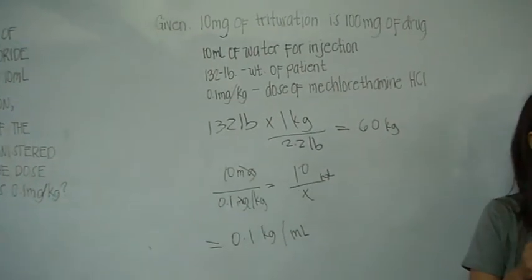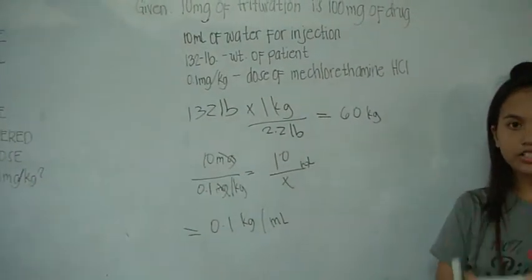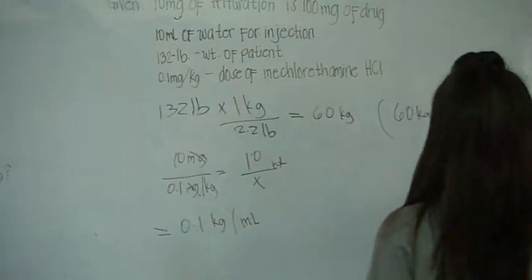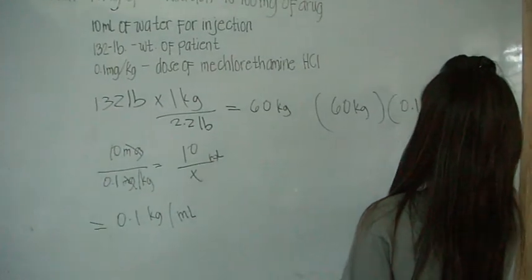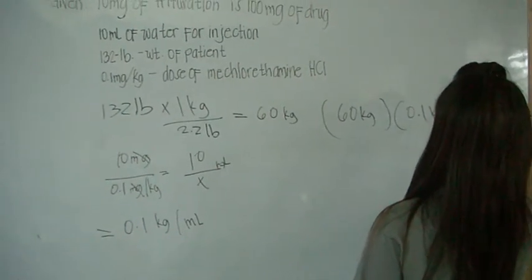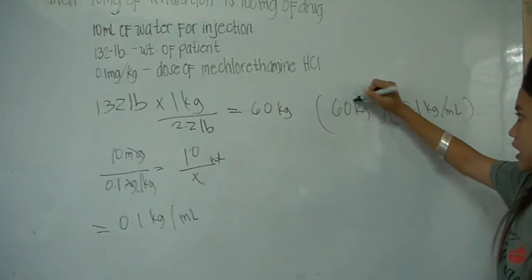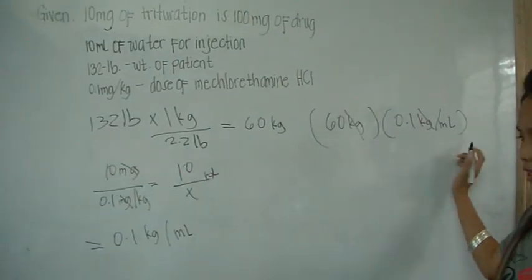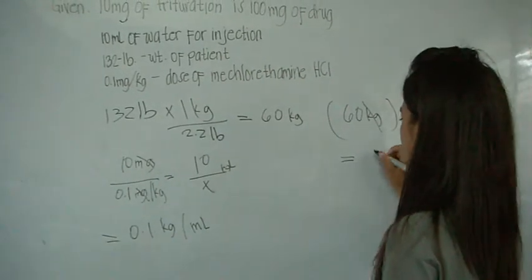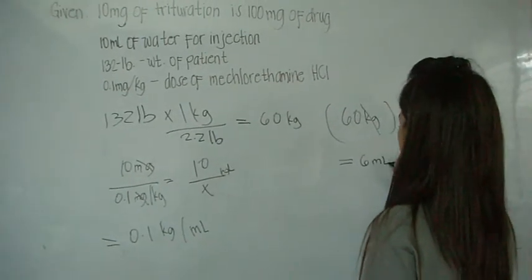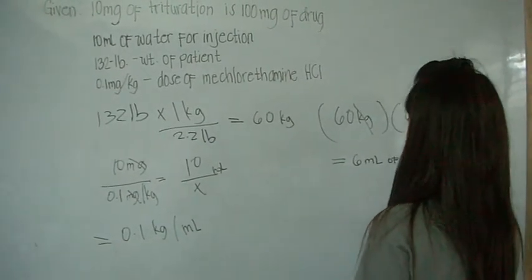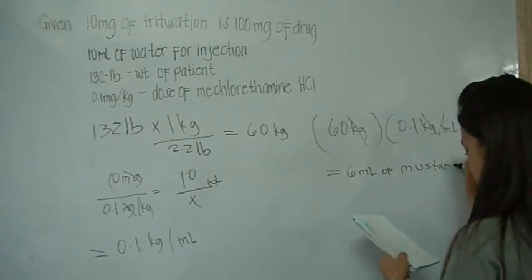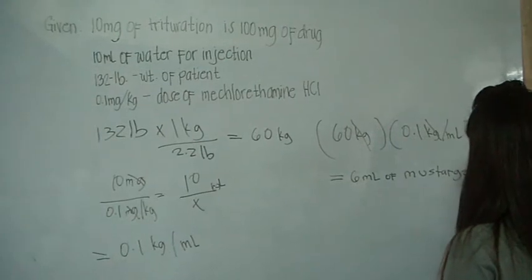We will cancel out milligrams and the kilogram, and ml will remain. After that, we will now give the milliliters of mustagen injection: 60 kg times 0.1 kg per ml. We will now again cancel kilograms so that milliliters will remain. The answer is 6 ml of mustagen injection.